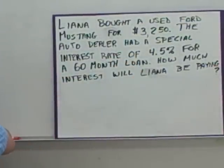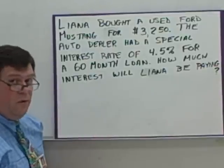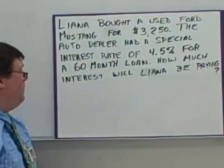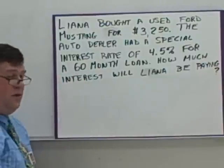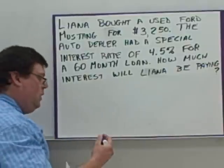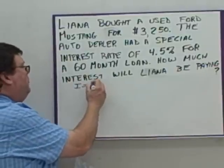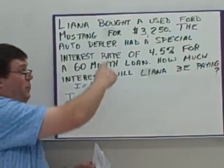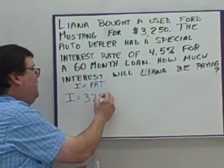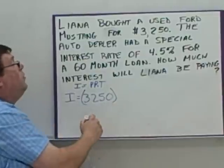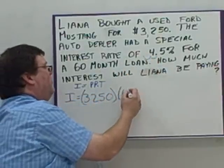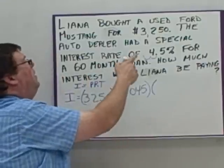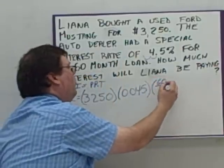Here we have a word problem. Many times, interest questions are going to be in word problems. Leanna bought a used Ford Mustang for $3,250. The auto dealer had a special interest rate of 4.5% for a 60-month loan. How much interest will Leanna be paying? We're using I equals PRT. The interest is our unknown, so it stays as I. The principal is $3,250. The rate is 4.5% as a decimal, so it's 0.045. And the time is 60 months, which is 60 over 12.